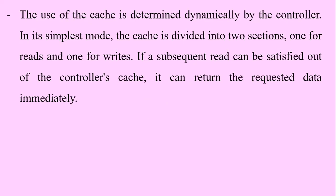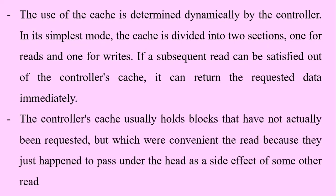The use of the cache is determined dynamically by the controller. In its simplest mode, the cache is divided into two sections — one for reads and one for writes. If a subsequent read can be satisfied out of the controller's cache, it can return the requested data immediately.